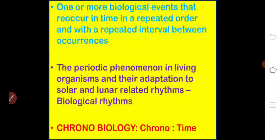We can define biological rhythms as one or more biological events that occur and reoccur in time in a repeated order with a repeated interval between occurrences. The periodic phenomena in living organisms and their adaptation to solar and lunar related rhythms is known as biological rhythms.